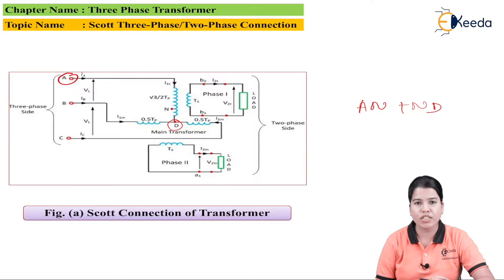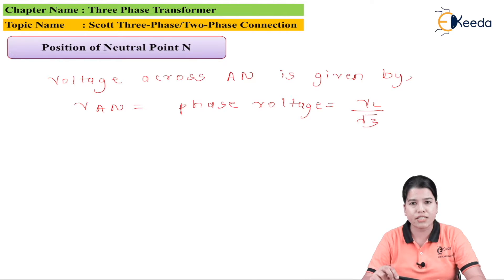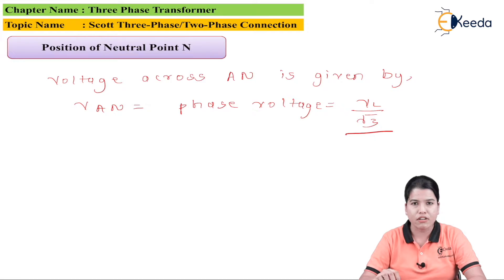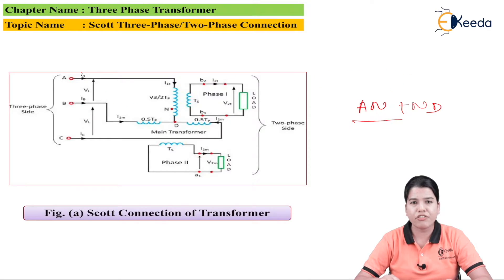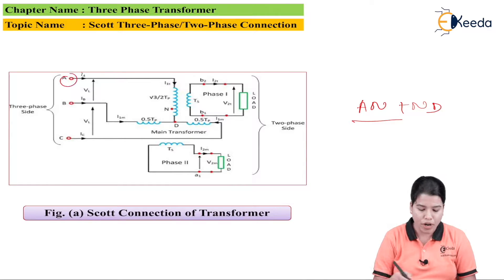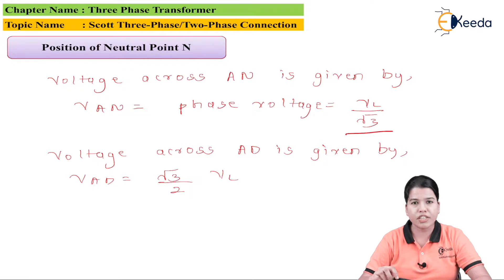First, let us find out the voltage across AN. The voltage across the point AN is nothing but the phase voltage. As this is a 3-phase 4-wire system with the neutral connected, this voltage will be VL divided by root 3. Now if we consider the point AD, that is the total primary winding of the teaser transformer, then the voltage across AD can be written as: VAD is equal to root 3 by 2 times VL. This formula we have already derived.